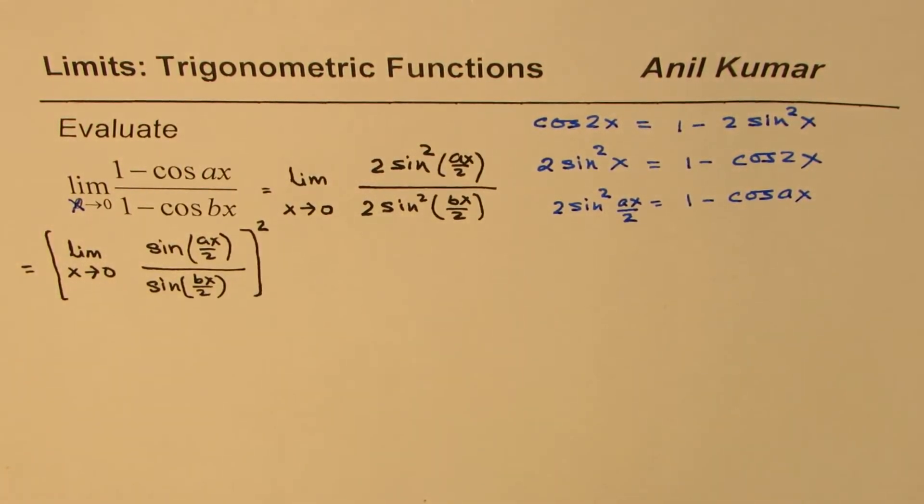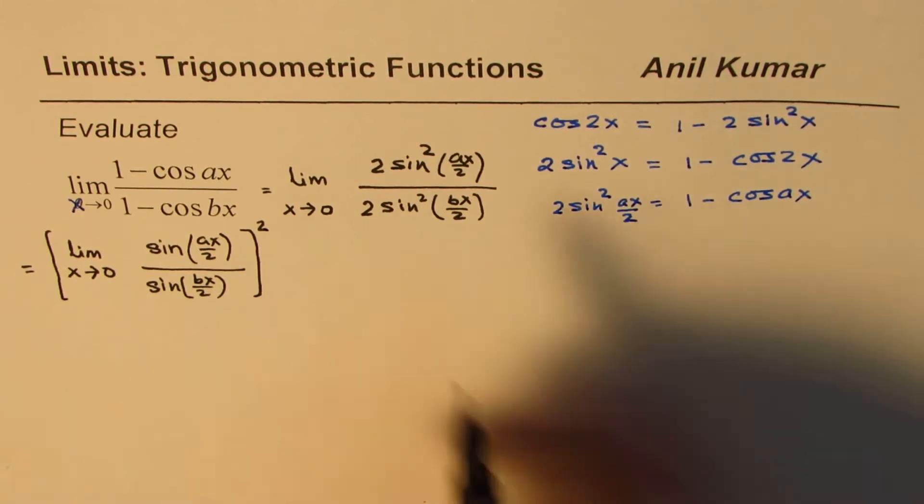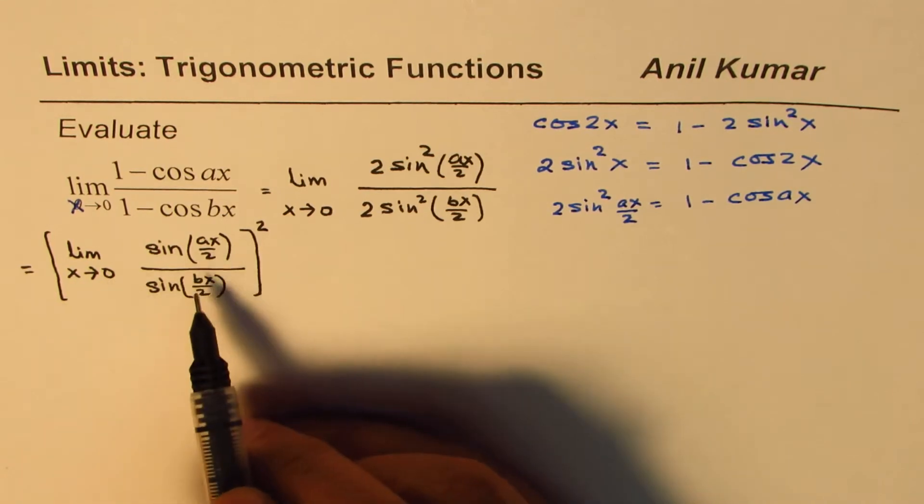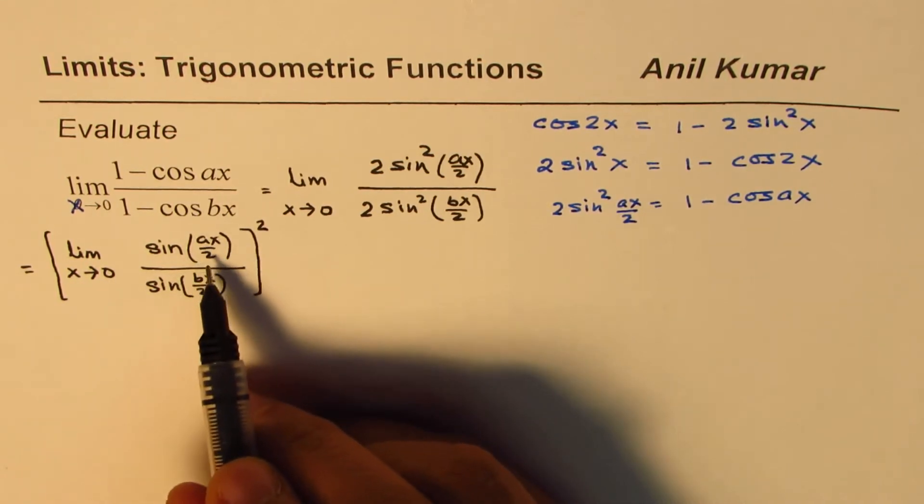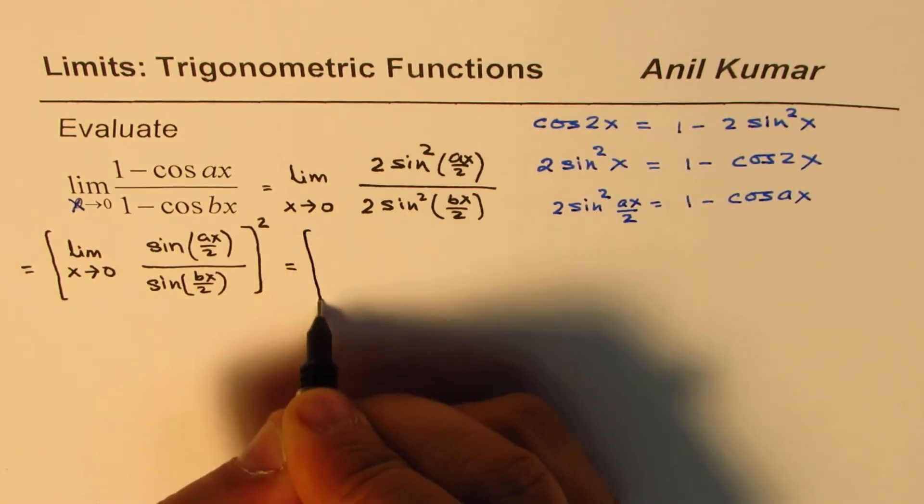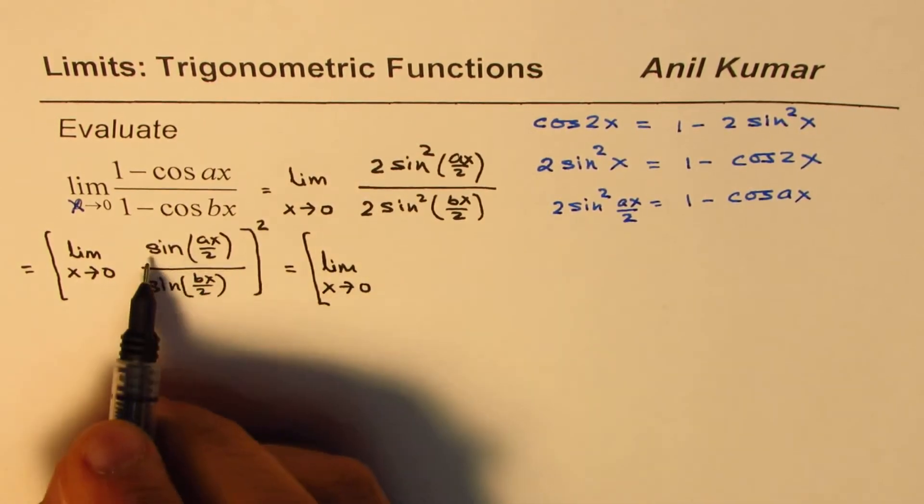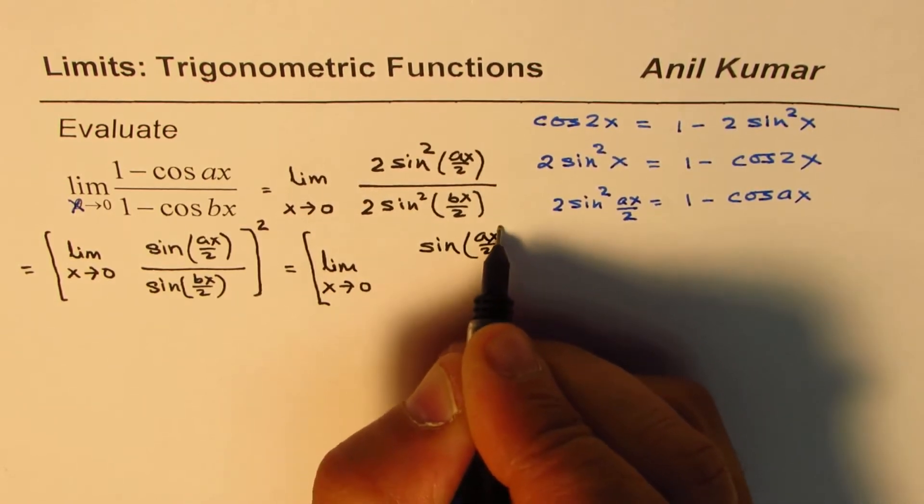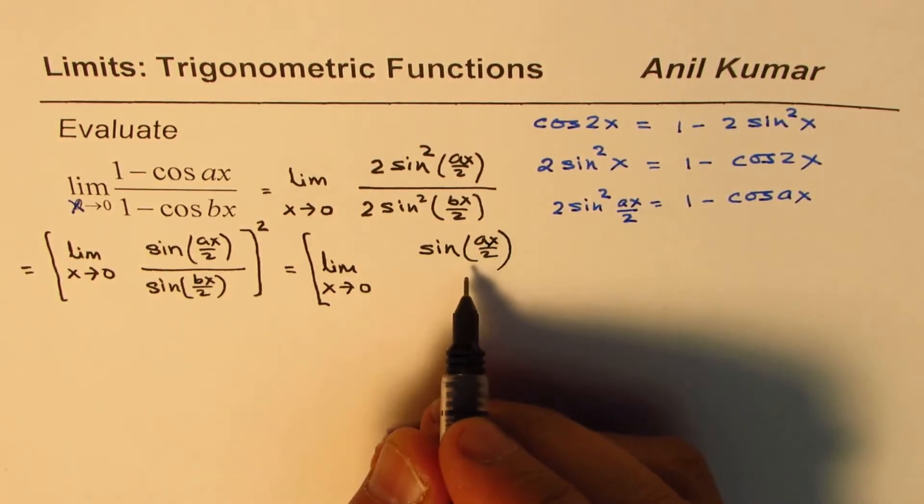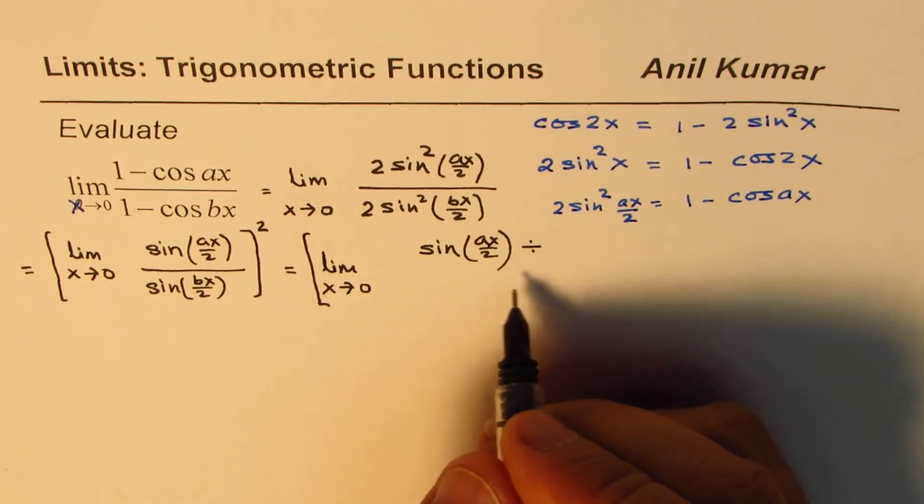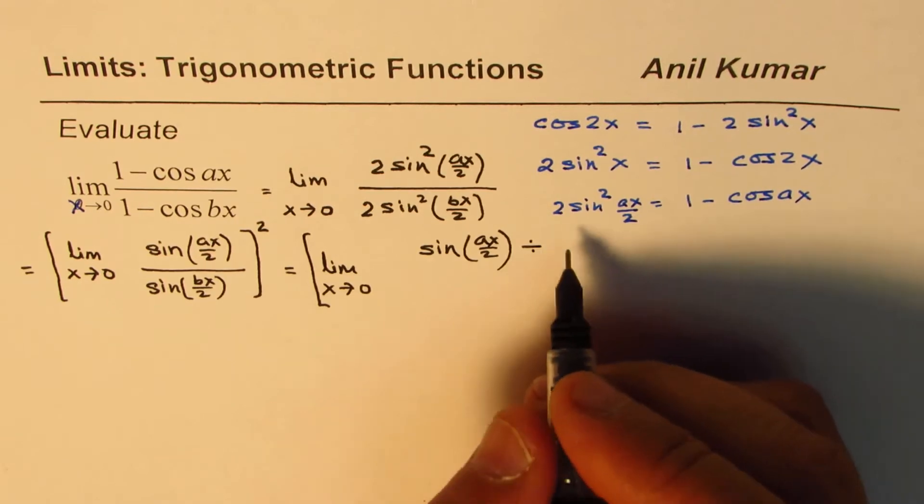Now we know limit for sin θ / θ when θ approaches 0 is 1, so if I write that in that form we could actually find the limit of this function easily. So we could write this as limit x approaches 0, so I have sin(ax/2)...